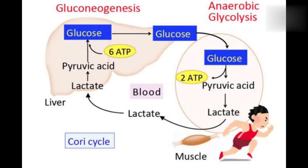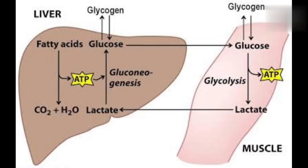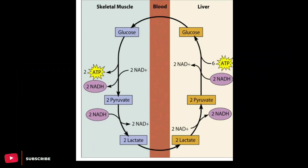The lactate is converted to pyruvate. Then through gluconeogenesis, that pyruvate becomes glucose. So the skeletal muscle produces lactate, the lactate goes through the bloodstream to the liver, and in the liver, lactate is converted to pyruvate and the pyruvate is converted to glucose.